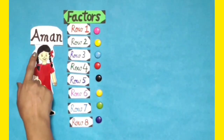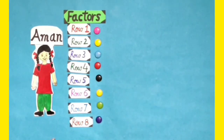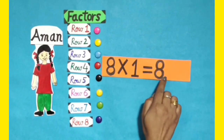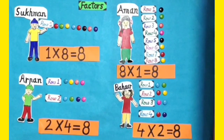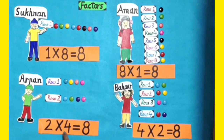Dear students, Amun has arranged these buttons in 8 rows with 1 button in each row, so in 8 rows there is 1 button in each row. This can be represented as 8 into 1 is equal to 8. So which of the arrangements can be written in multiplication form? 1 into 8, 8 into 1, 2 into 4, and 4 into 2.